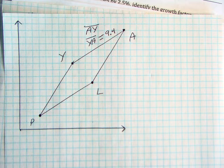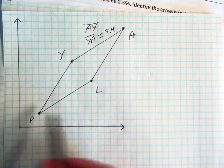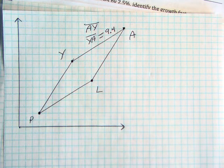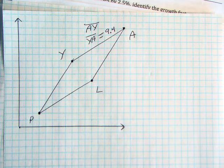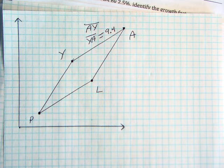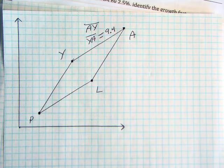It says to label the vertices. The vertices are point P, point L, point A, and point Y. Just one of them is called a vertex, which the definition of a vertex is when two lines meet, or where two lines meet. When you have more than one vertex, it's called vertices.